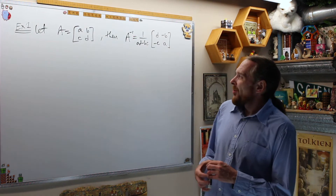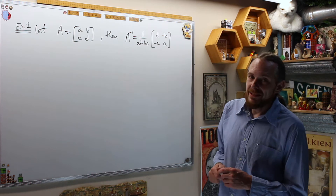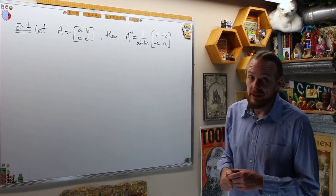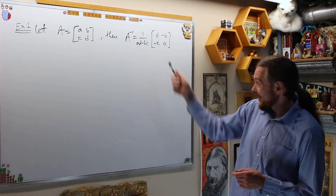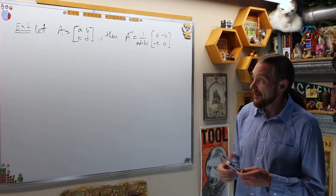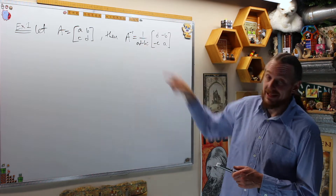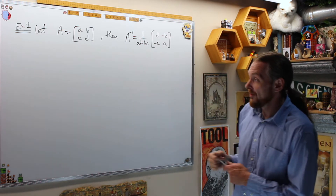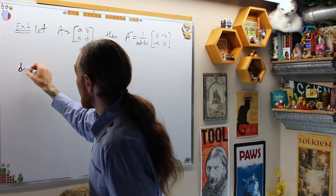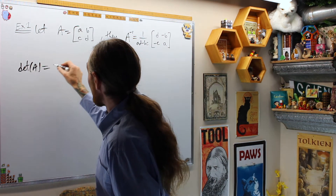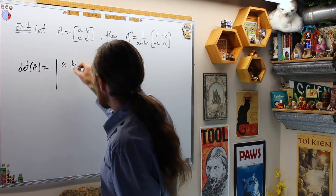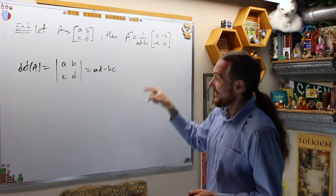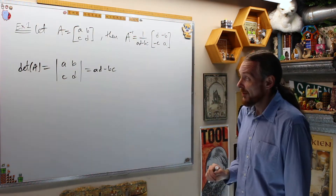For our first example, in section 2.3 we used row reduction to show an explicit formula for the inverse of a 2 by 2 matrix. We can derive this using our formula. The determinant of A is AD minus BC, and that's 1 over that.